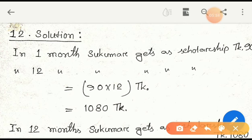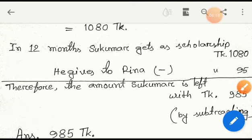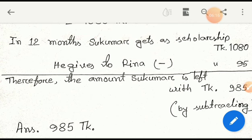One month, Shukumar gets as scholarship 90 taka. And 12 months, he gets in total amount 90 into 12 equals 1080 taka. Total amount is 1080 taka. Okay, dear students. In 12 months, Shukumar gets as scholarship 1080 taka.